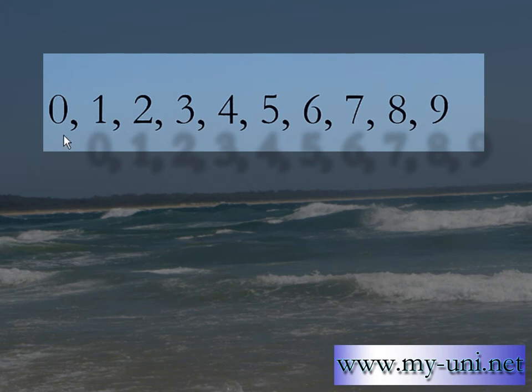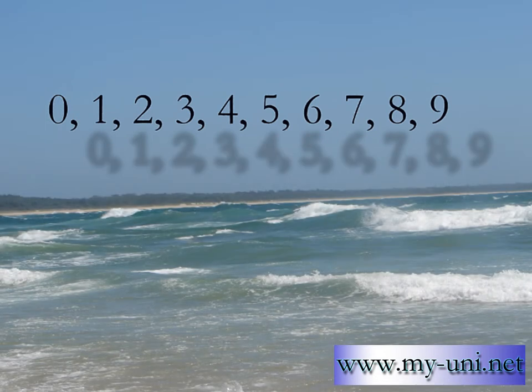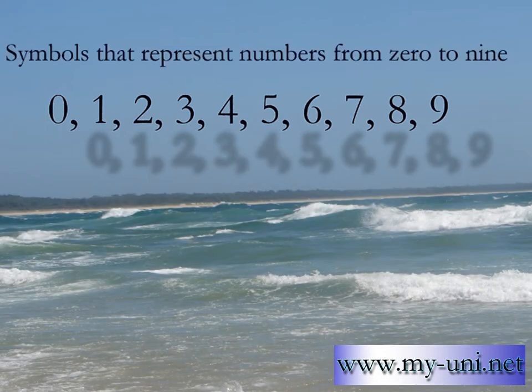How many of you can tell me what is in front of us? While we usually call them numbers, the answer is technically wrong. What we have here is simply a set of 10 symbols. These symbols represent numbers or quantities from 0 to 9.